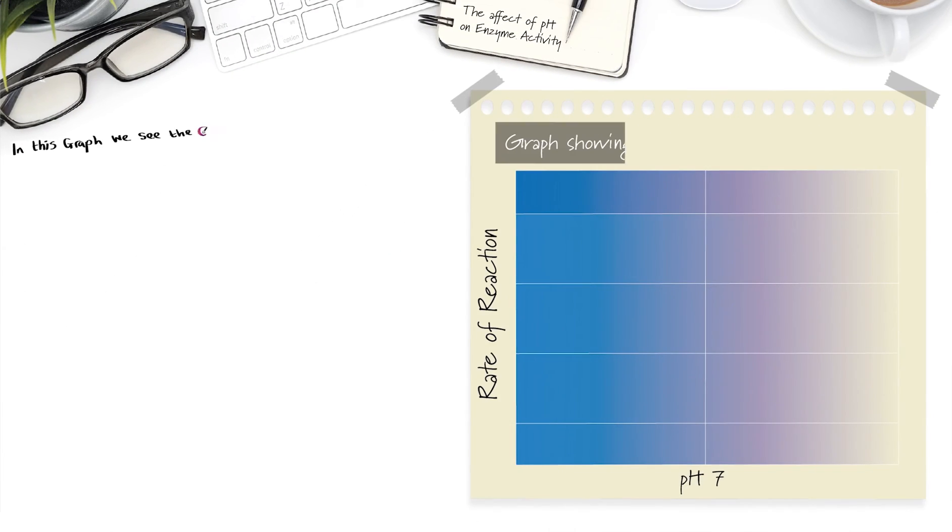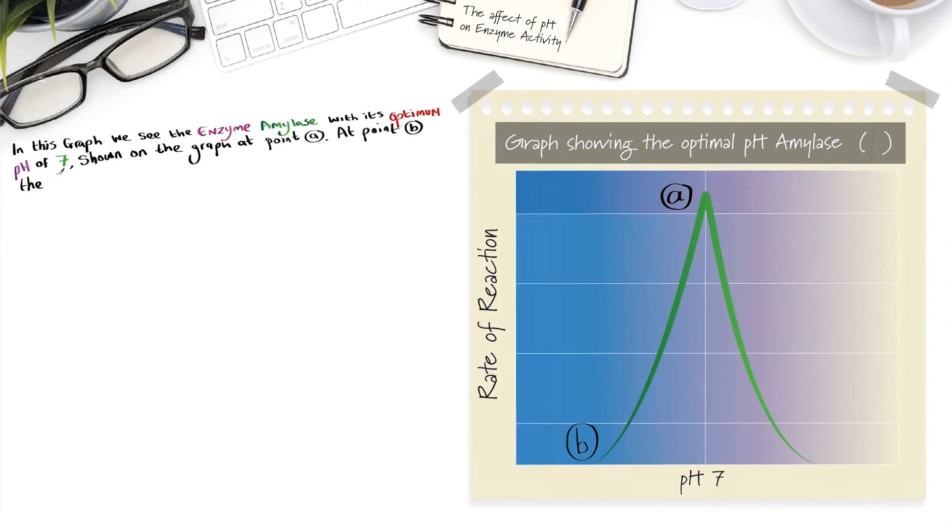In this first graph, we see the enzyme amylase, with its optimum pH of 7, shown on the graph at point A. At point B, the enzyme has denatured due to the increasingly acidic conditions, as the pH levels lower, causing the ionic and hydrogen bonds to disrupt and break.